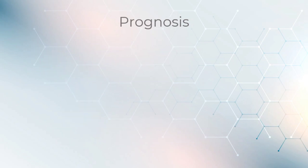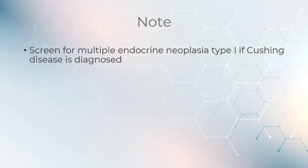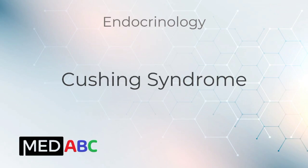The prognosis is good if the tumor can be removed. Please note that screening for multiple endocrine neoplasia type 1 is indicated if Cushing disease is diagnosed. This video was part of our endocrinology series and it was on Cushing syndrome.